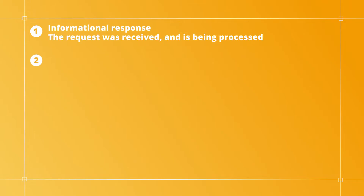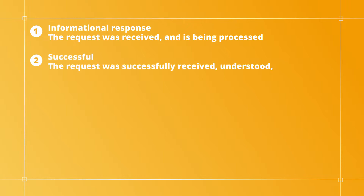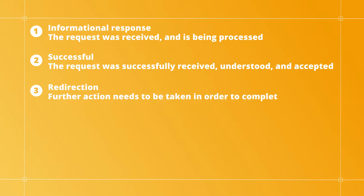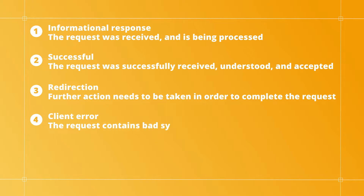Here's the list of classes. 1: Informational response — the request was received and is being processed. 2: Successful — the request was successfully received, understood and accepted. 3: Redirection — further action needs to be taken in order to complete the request. 4: Client error — the request contains bad syntax or can't be fulfilled.